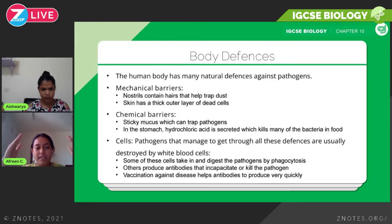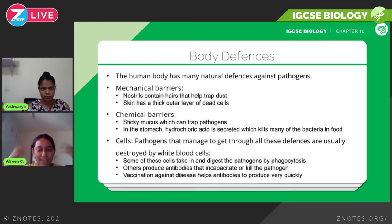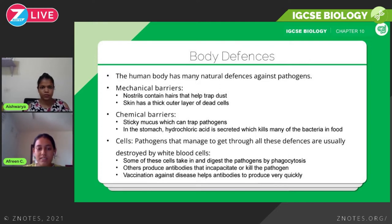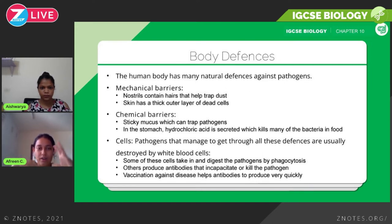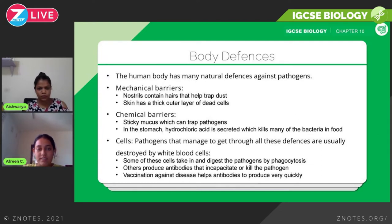Now we look at the specialized cells. Pathogens that get through all the chemical and mechanical defenses are usually destroyed by white blood cells. There are two main types. The first type engulfs and digests pathogens using enzymes inside the cell — this process is called phagocytosis, and it's carried out by cells called phagocytes.